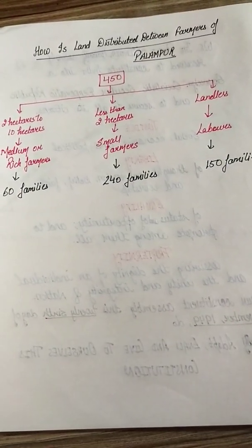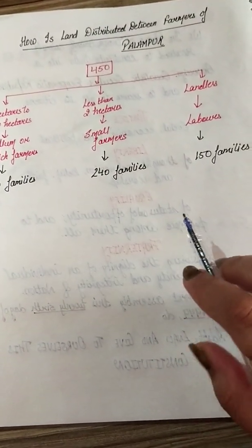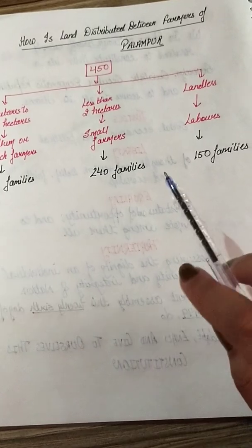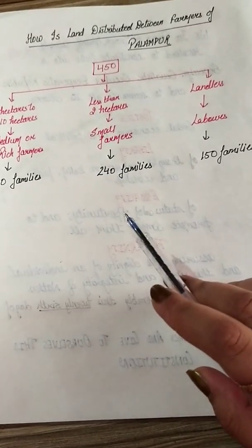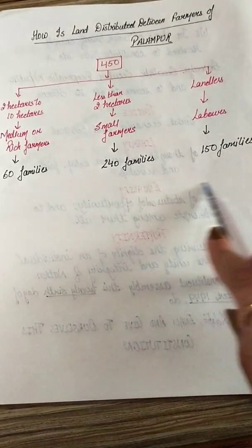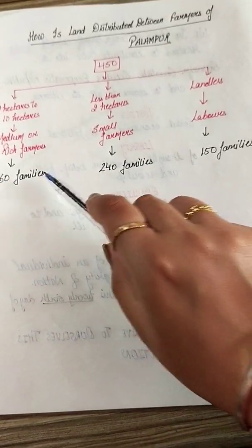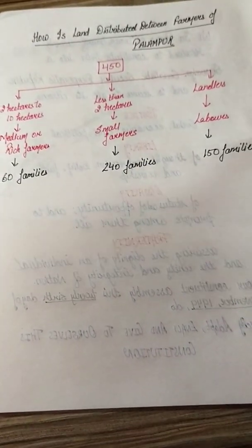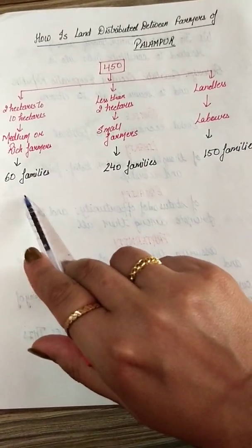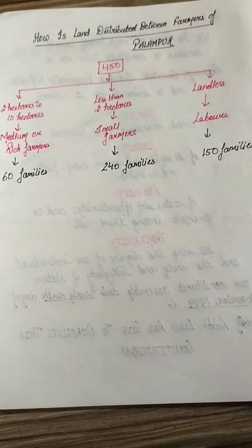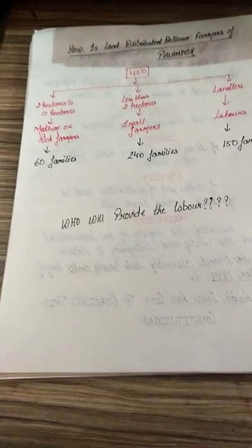This is what we covered in our last video. Now there is one more question related to this topic. We discussed the factors of production — the first was land, which is now complete. The next factor is labor. The question arises: with 450 families all doing work, how do the rich farmers get labor? Where does their labor come from?